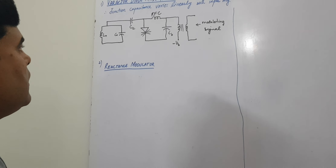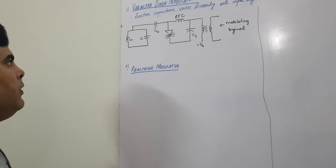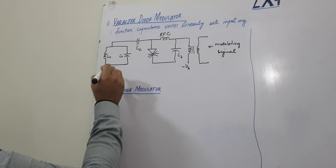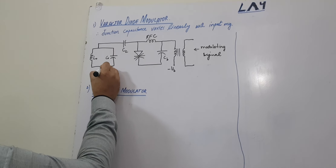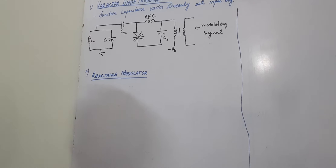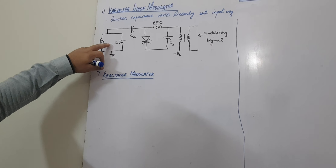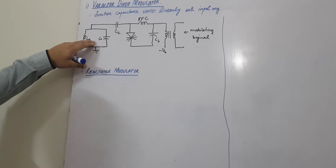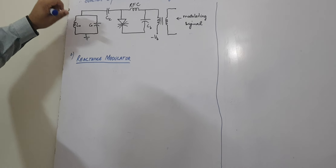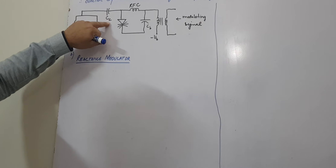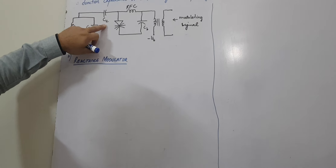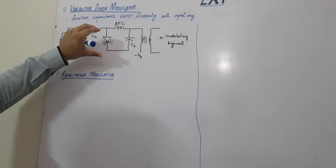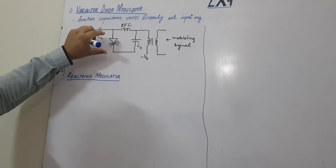This is the basic circuit of the varactor diode modulator. You can see that this one is basically the tuned circuit, like the oscillator. We can generate the frequency of the oscillator using that circuit. This one is the coupling capacitor and this one is the varactor diode. The varactor diode is a reverse bias device.